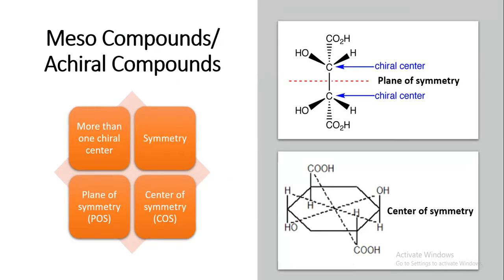Meso compounds are optically inactive achiral compounds which may have more than one chiral center, but are optically inactive due to the overall symmetry of the compound — either a plane of symmetry or a center of symmetry. Here we have shown an example where the molecule can be cut into two equal halves, so the two chiral centers do not make it optically active. Another example shows a compound with a center of symmetry, making it optically inactive.